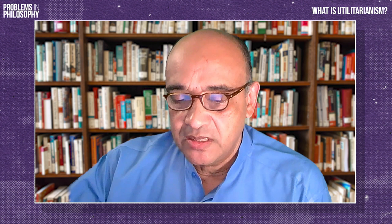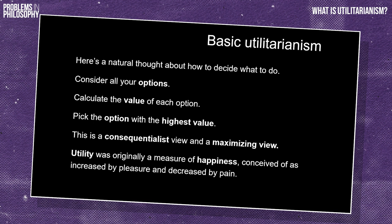If you want to be a maximizing consequentialist, you need some way of calculating the value of your options. In the early 19th century, the founders of utilitarianism — Jeremy Bentham and his friend James Mill — thought that the value of an action was determined by how much happiness it produced. They sometimes called this utility, hence the name of the doctrine. They thought that utility was increased by pleasurable experiences and decreased by painful ones. So utilitarianism was maximizing consequentialism about utility.